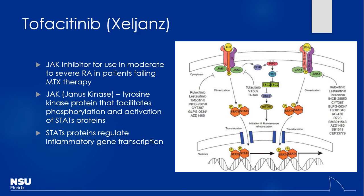The last one in this category is tofacitinib or Xeljanz. We'll consider this non-biologic. It's the newest of the bunch and very specific in targeting. Instead of affecting overall immune cell replication, this specifically targets a tyrosine kinase receptor. It's good for both moderate and severe RA, usually used as a backup once patients fail methotrexate. It works as a JAK inhibitor — Janus kinase inhibitor — which when activated by interleukin-2, causes downstream gene transcription for inflammatory mediators.